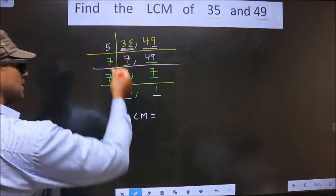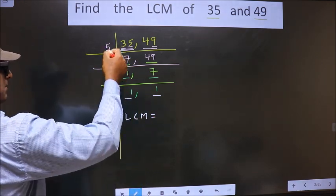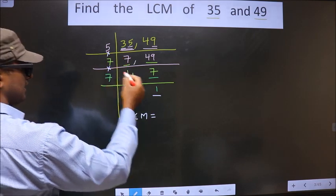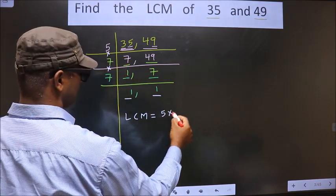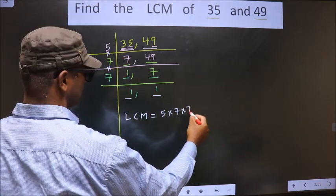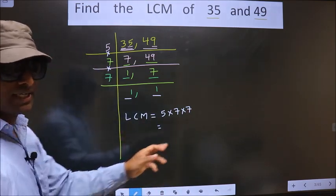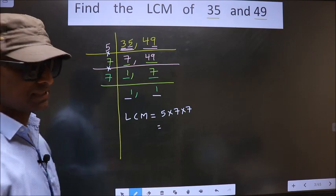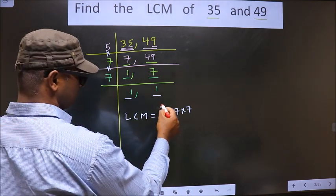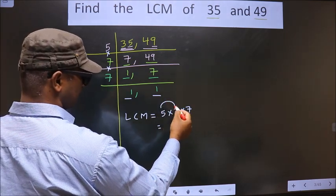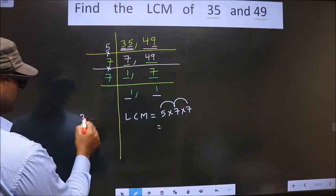LCM is the product of these numbers, that is 5 into 7 into 7. Okay, so now let us multiply these numbers. 5 into 7 is 35. 35 into 7, how much do we get?